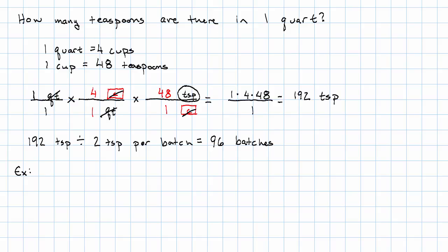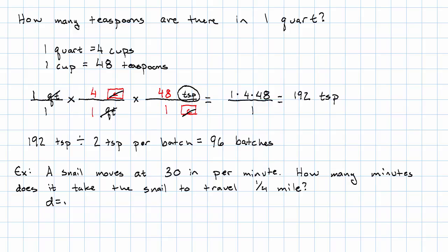Suppose you know that a snail moves at 30 inches per minute. And you want to know how many minutes does it take the snail to travel a quarter of a mile across campus. Again, you know you want to use the formula distance equals rate times time. You know the rate is 30 inches per minute. But in order to use that rate, you need to have the distance in inches.